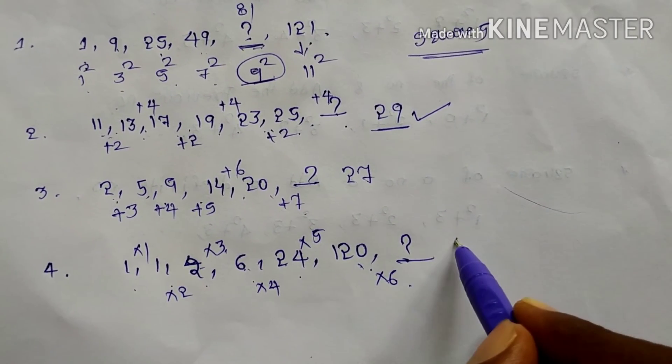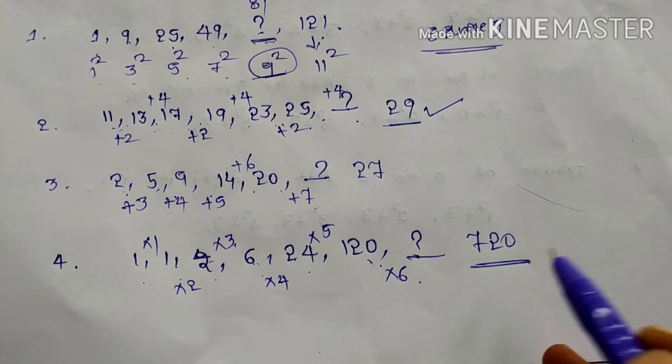Which number will come here? 1, 2, 3, 4, 5, 6 only. That means 120 into 6. You will get 720 is your answer.